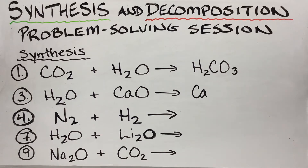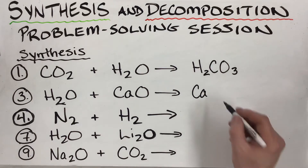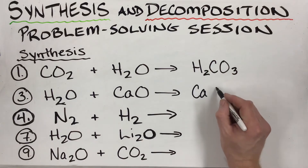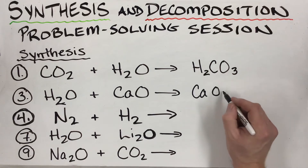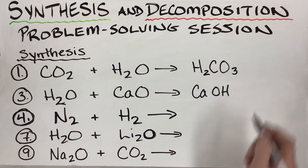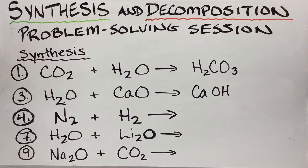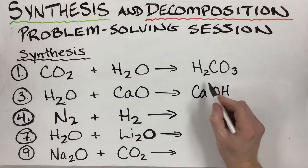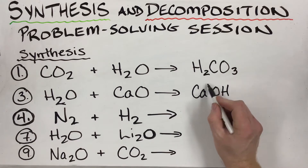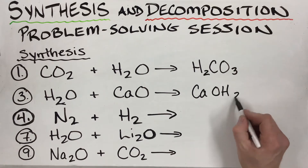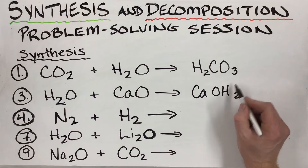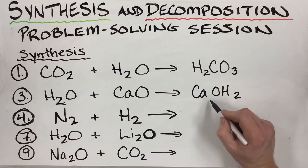Carbonate has a charge of two, so crisscrossing gives us carbonic acid, H₂CO₃. Checking the balance: two hydrogens, two hydrogens; one carbon, one carbon; two oxygens plus a third oxygen is three oxygens. That one is already balanced.